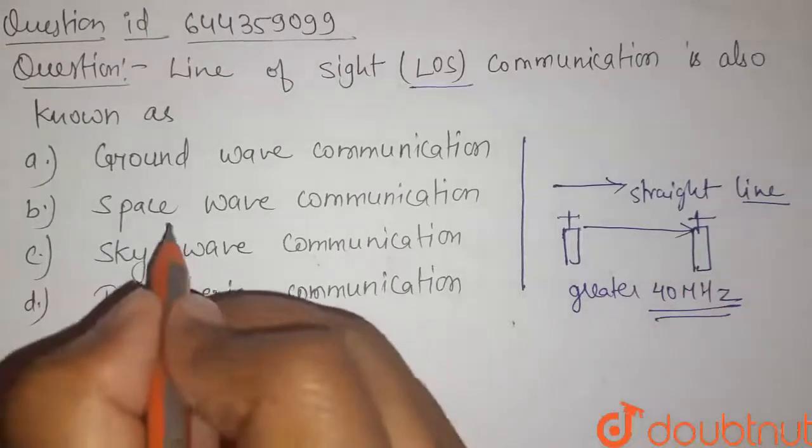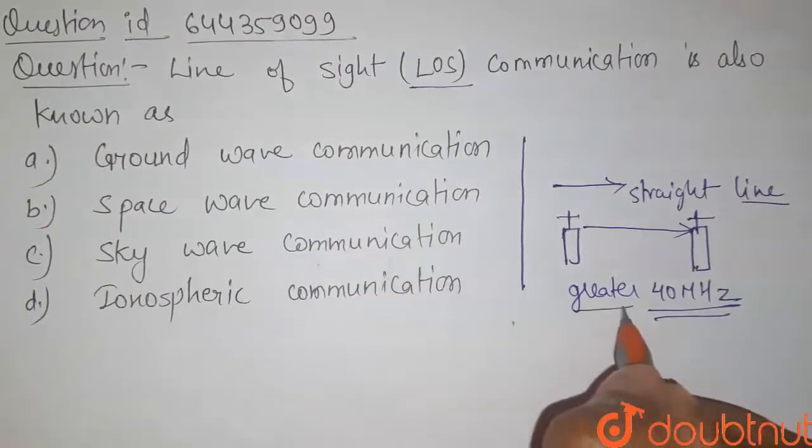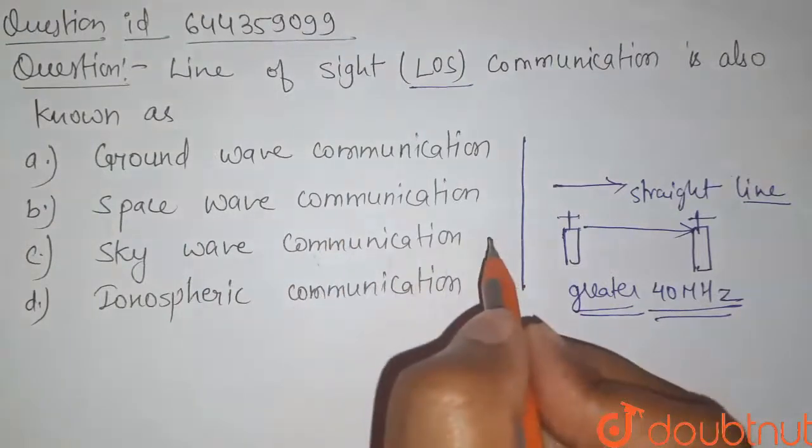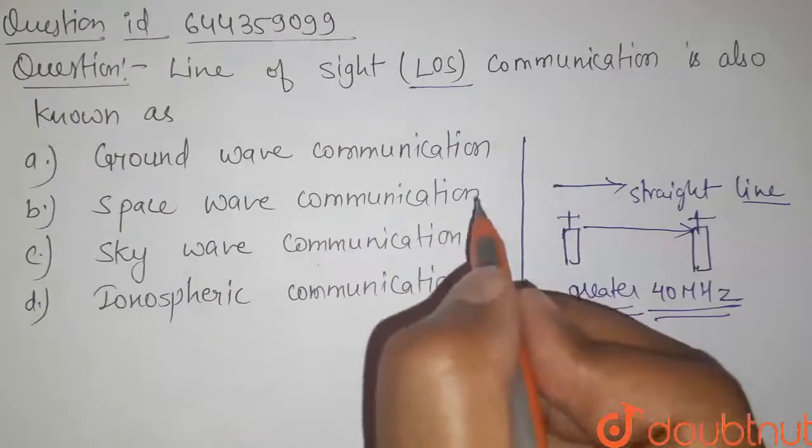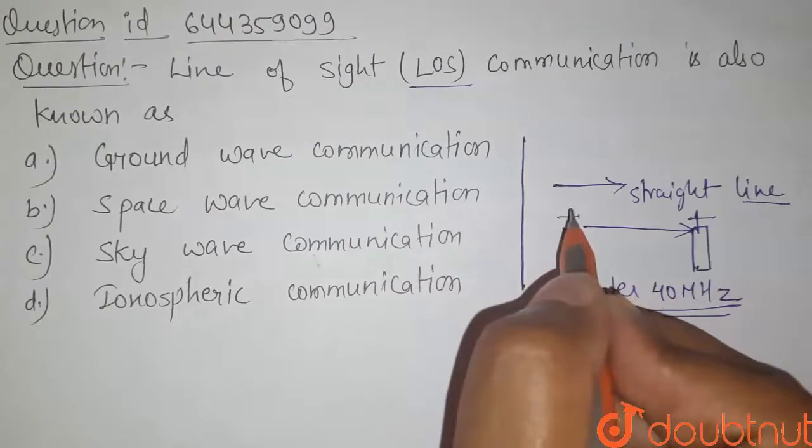And in space wave communication we also use the frequency greater than 40 megahertz so that it can penetrate the atmosphere and reaches in the space and then from the space the signal can be reflected by using the satellite onto again the earth surface.